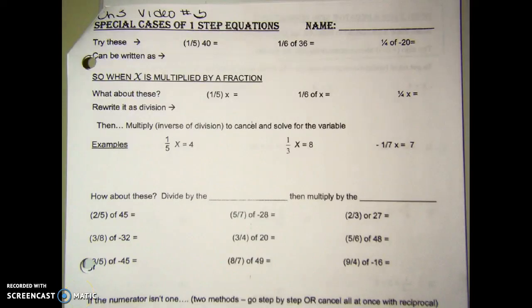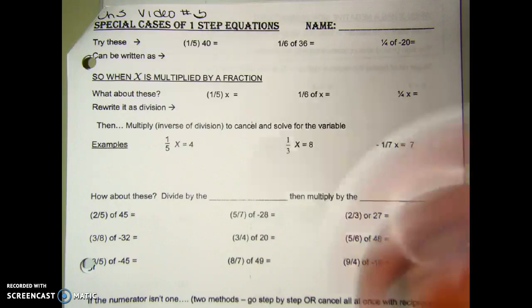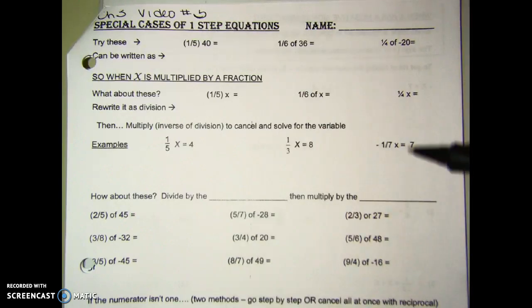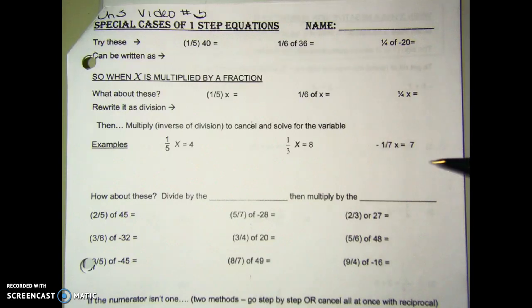This is video number five for chapter three. It doesn't look like your normal format, but we're just going to do it together on this page as notes. This is special cases of one-step equations, where we have to deal with some fractions and some negatives when we're solving.